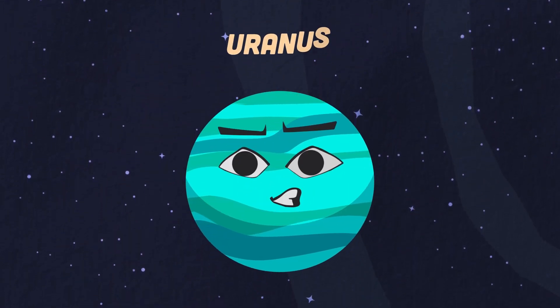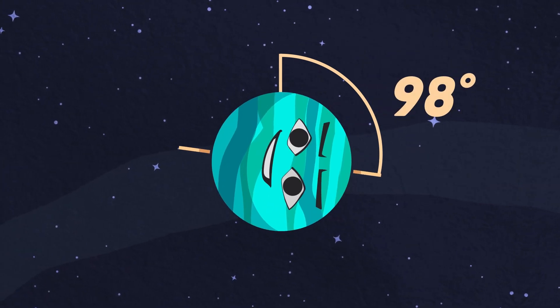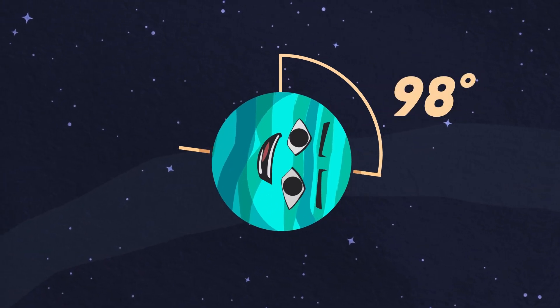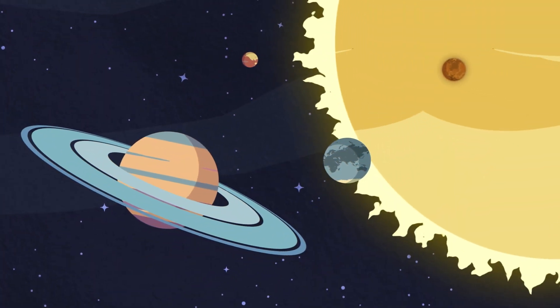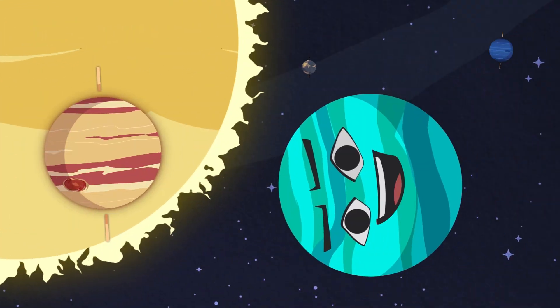I'm Uranus, I have the largest tilt at 98 degrees and all of the solar system. I spin on my side with ease. Every planet in the Milky Way rotates at a comfortable 20 to 30-ish degrees, but not me, this is how I lay.